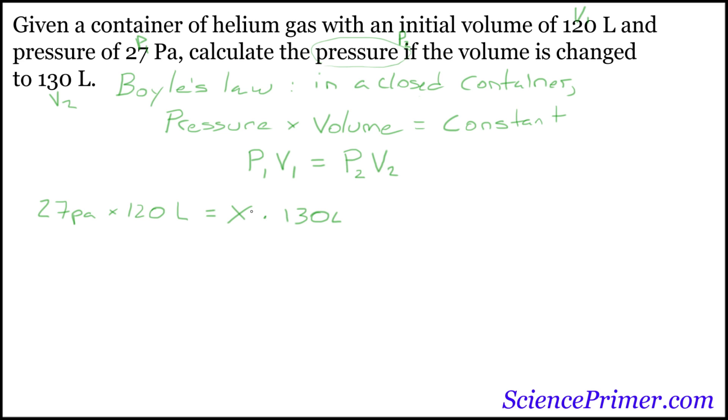Now, to solve this question, we need to isolate x. To do this, we will divide both sides by 130 liters. If it cancels on this side, we end up with x by itself, and x equals 27 pascals times 120 liters,